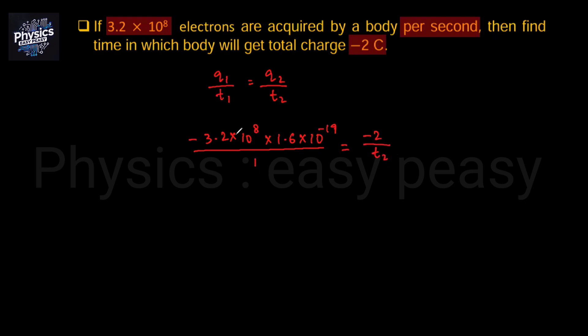Cross-multiply: numerator and denominator on the left side, numerator and denominator on the right side. So T2, minus minus cancel out, equals 2 divided by 3.2 multiplied by 1.6 into 10^8 and 10^-19.